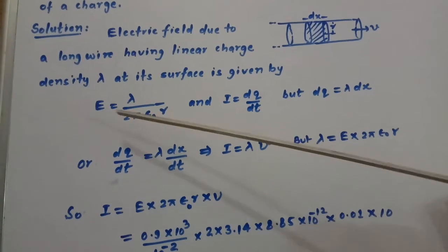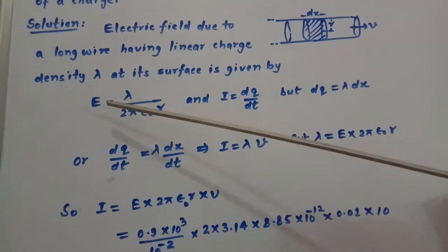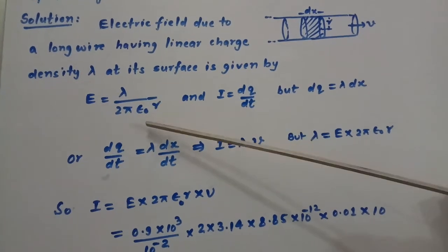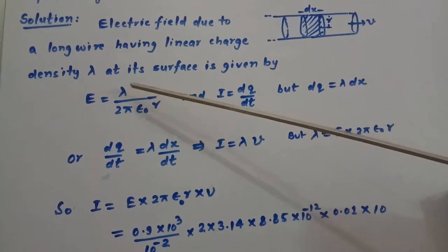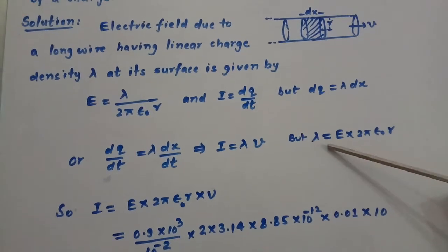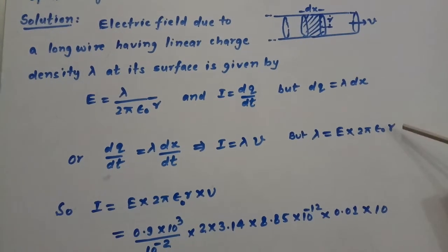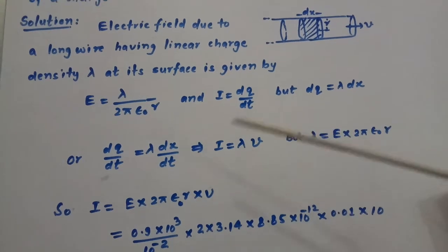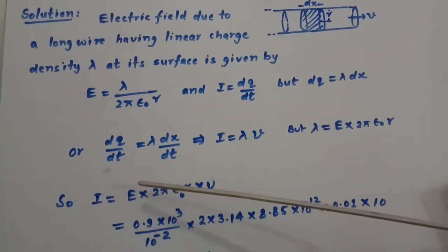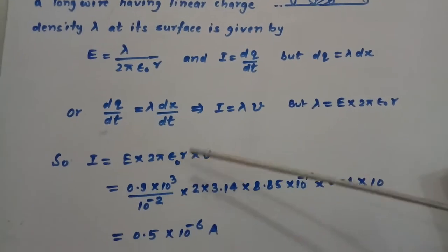But we have already written that E equal to lambda divided by 2 pi epsilon naught r. So we can get value of lambda. Lambda will be equal to E times 2 pi epsilon naught r. We put this value here. So we get I equal to E times 2 pi epsilon naught r into v.